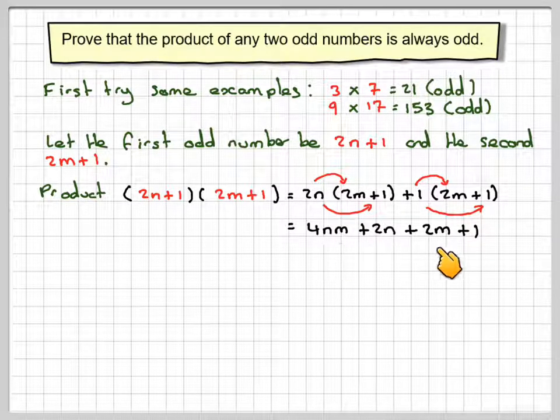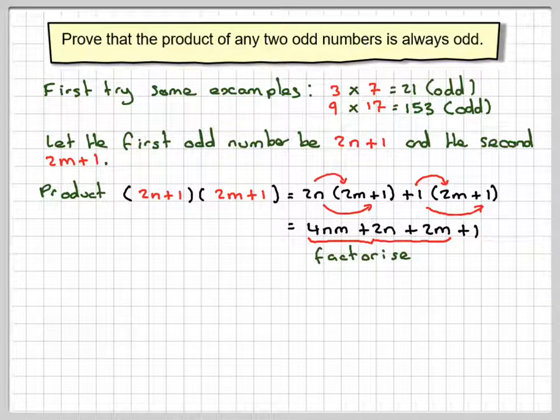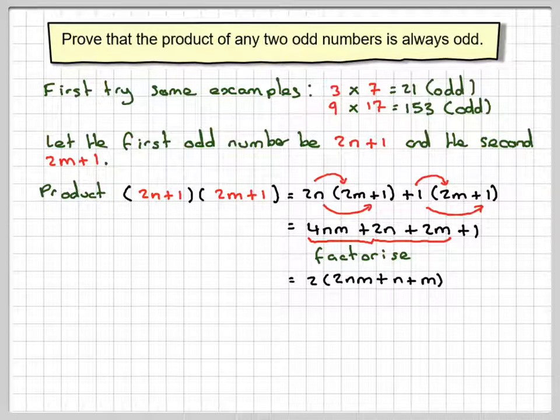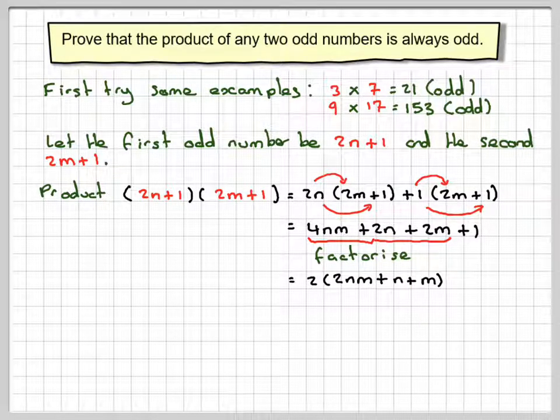There is a common factor here in the first three terms only. So we'll factorise the first three terms only. It's a common factor of 2. We'll take out 2, and we'll be left with 2nm plus n plus m, and we've still got the plus 1 on the end.